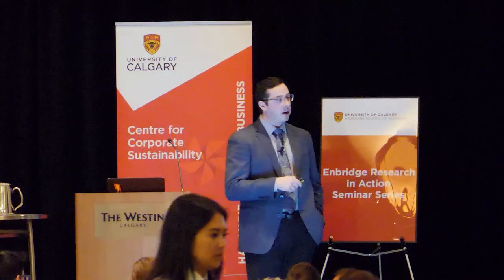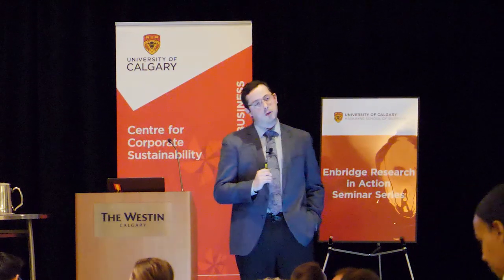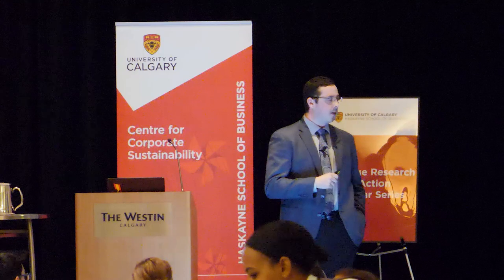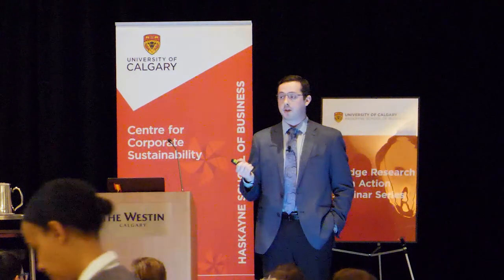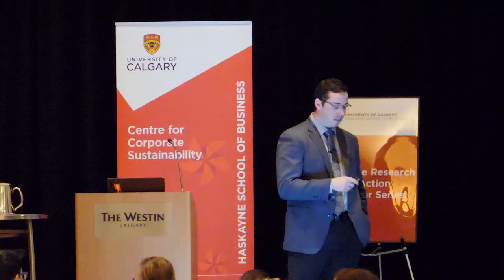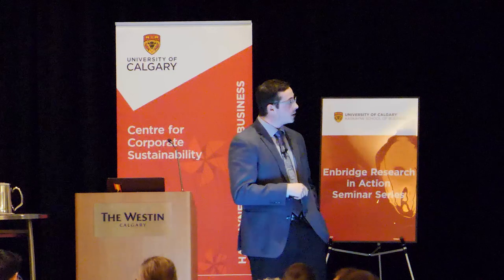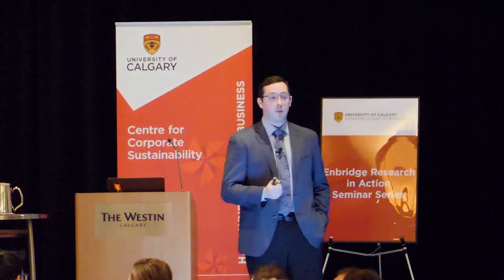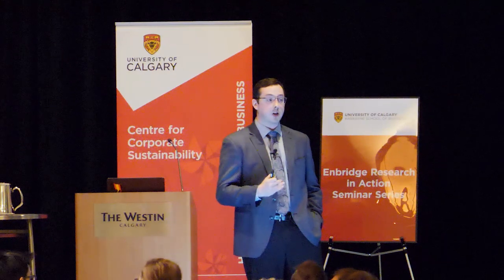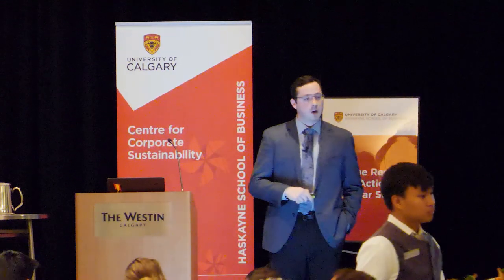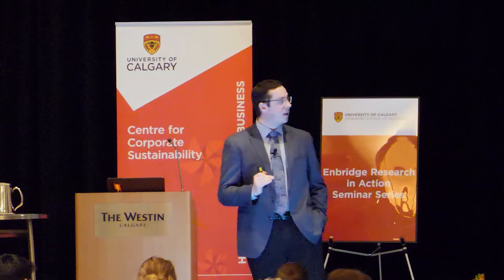We have three main pipeline systems in Western Canada. The Enbridge system carries crude from Alberta to the U.S. Midwest — a major refining hub — at roughly 2.7 million barrels a day, making it the dominant export route. The Keystone system runs 590,000 barrels a day from Alberta to the U.S. Gulf Coast, where there's a large amount of heavy crude refining capacity. A smaller system, the Trans Mountain pipeline, moves 300,000 barrels a day from Alberta to the BC coast.